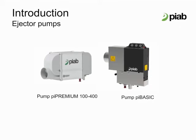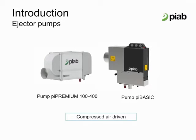In the vacuum conveying industry, there are two main types of vacuum pumps used: compressed air driven vacuum pumps, or ejector pumps, and mechanical pumps. For our PyFlow INF line of vacuum conveyors, we utilize our PIAB PI Basic ejector pump, and on the PyFlow P line, we use our PI Premium ejector pump.